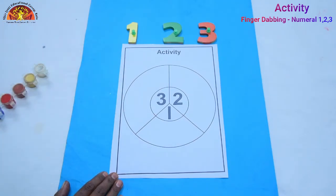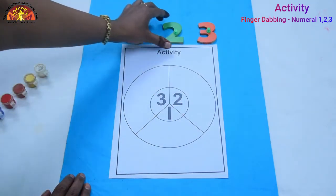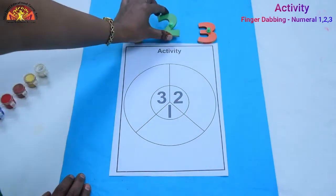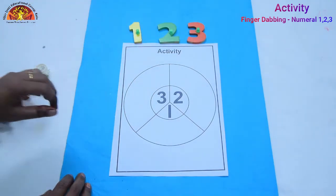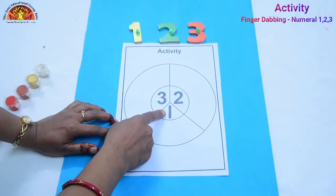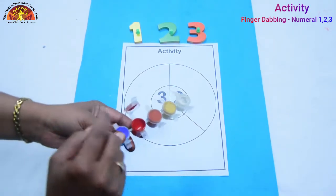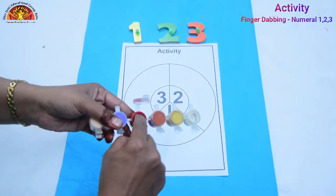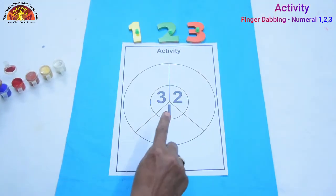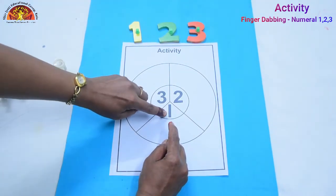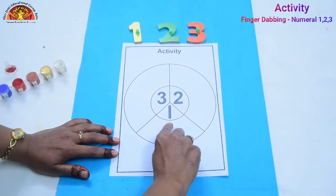Kids, as you can see, here are 3 numerals. This is numeral 1, this is numeral 2, and this is numeral 3. So kids, now tell me which numeral is this? This is numeral 1. So now we will dip our finger like this and dab it here only one time because this is numeral 1. So we will dab it here one time.